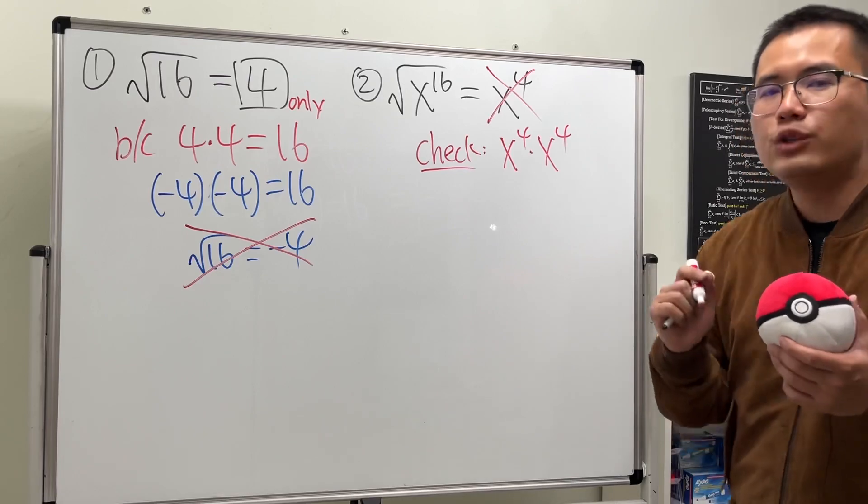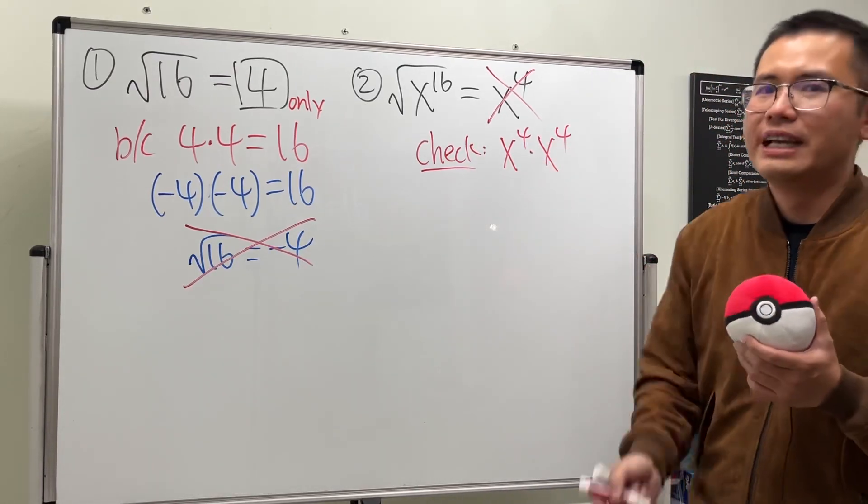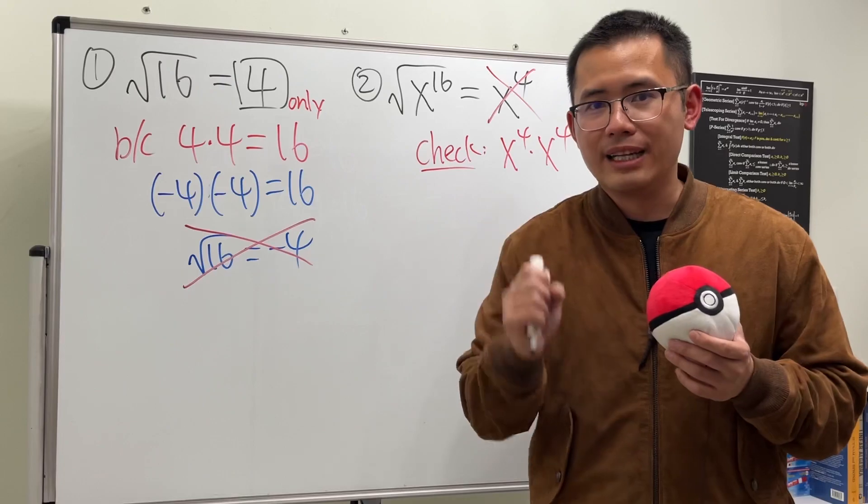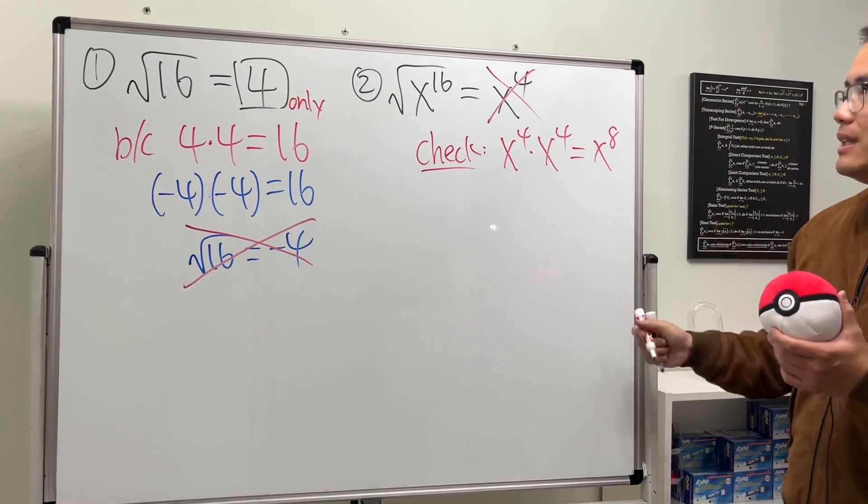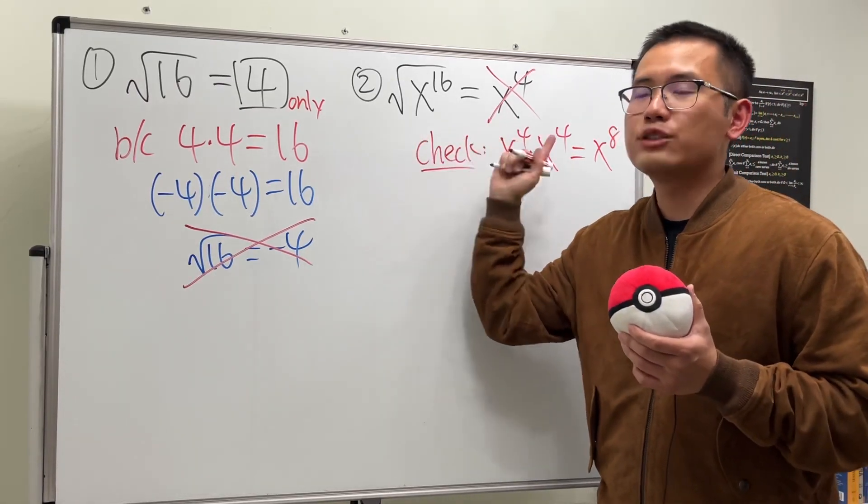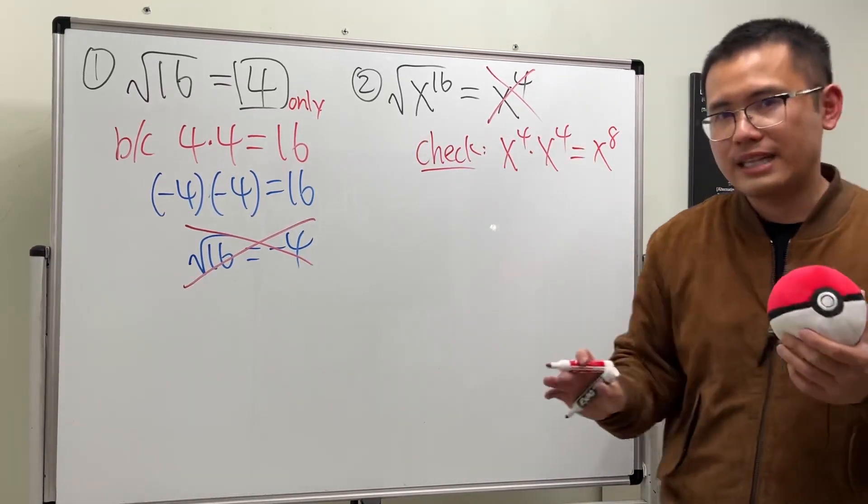What exactly do we have to do with the exponents? Yes, we will have to add them up, and when we do this is x to the 8. We don't get x to the 16. That's why x to the fourth power is not correct.